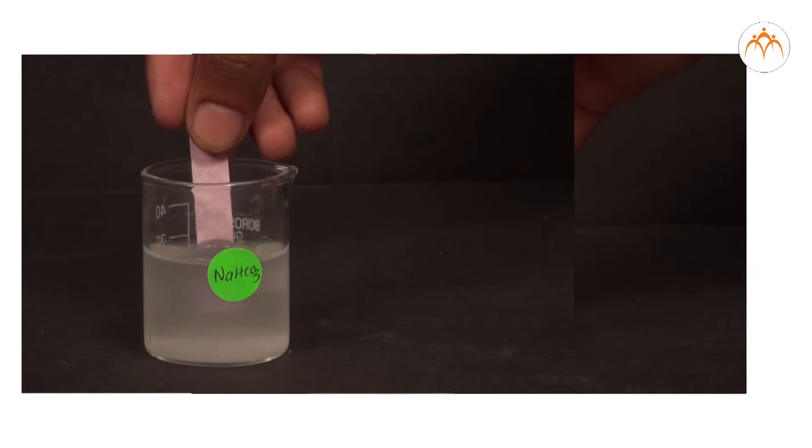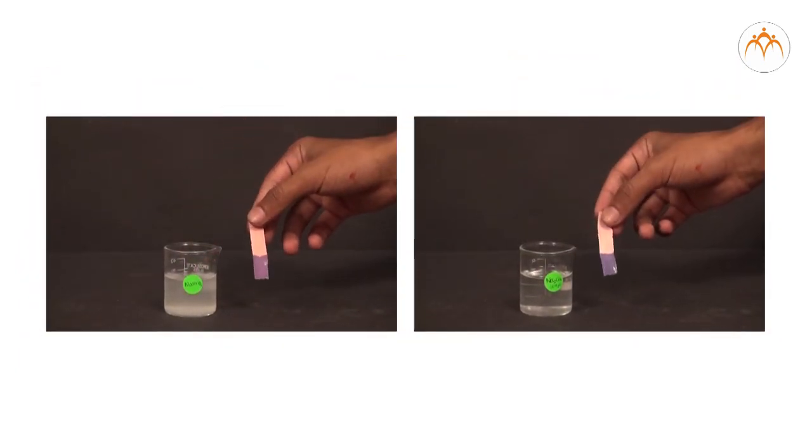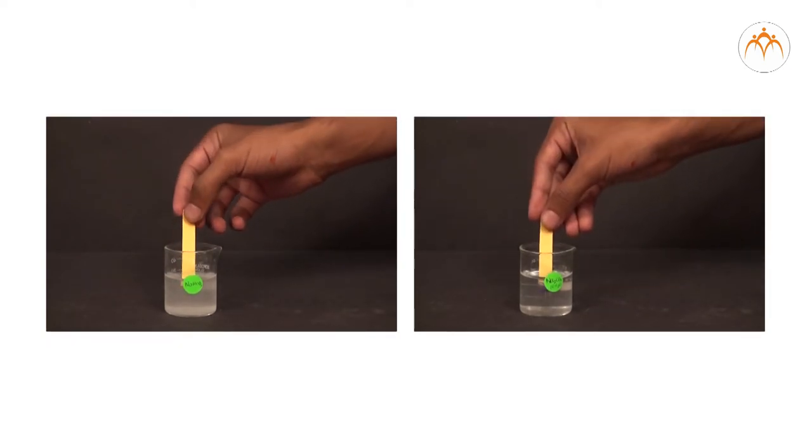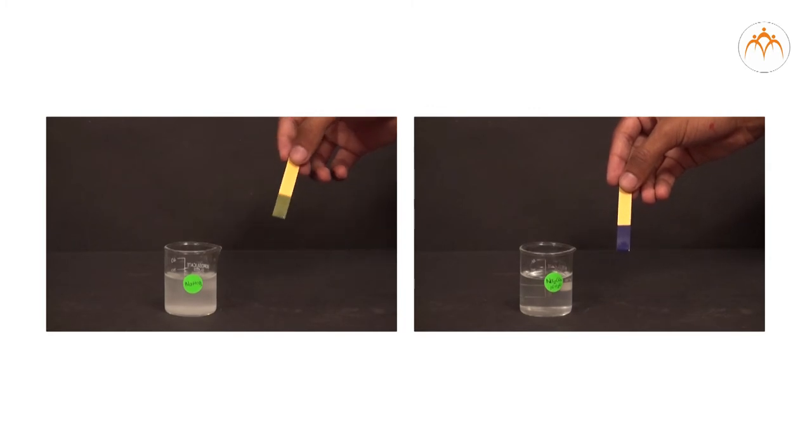We prepared aqueous solutions of the two samples and tested them using litmus paper. Then, we placed two drops of each solution on pH paper and compared the color shades.